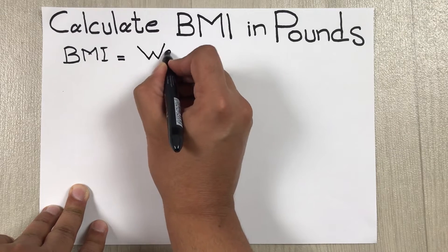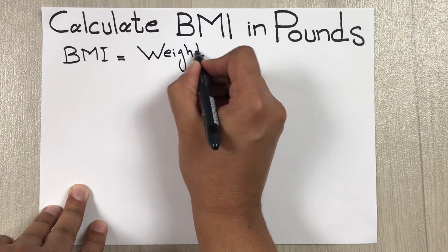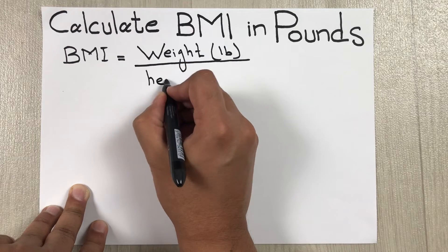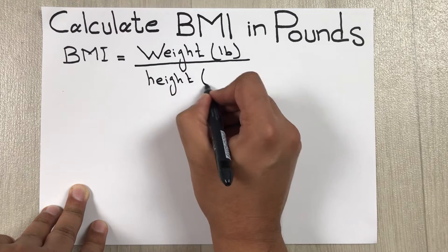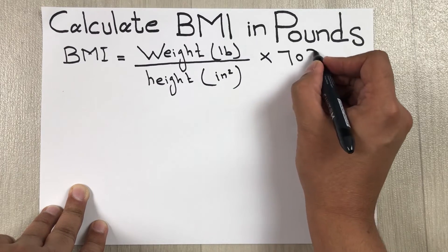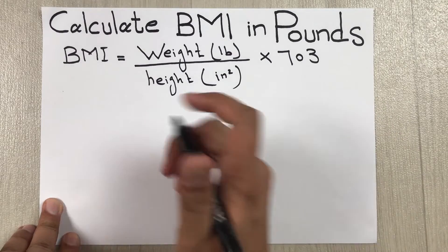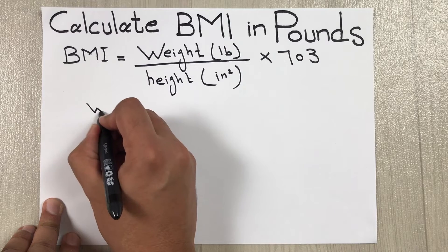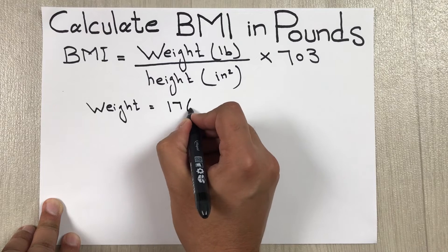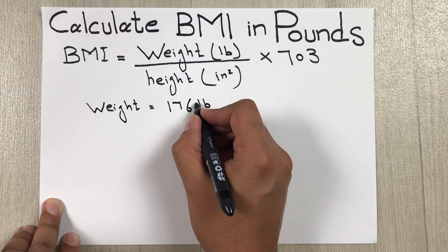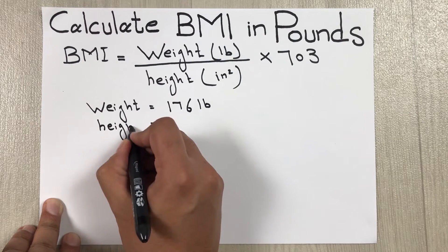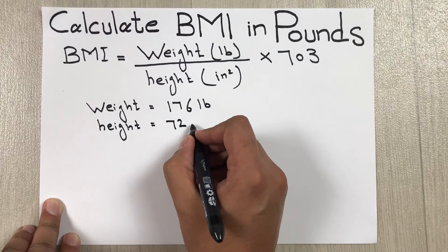So this is the formula. Now let's say our weight is 176 pounds and our height is 72 inches.